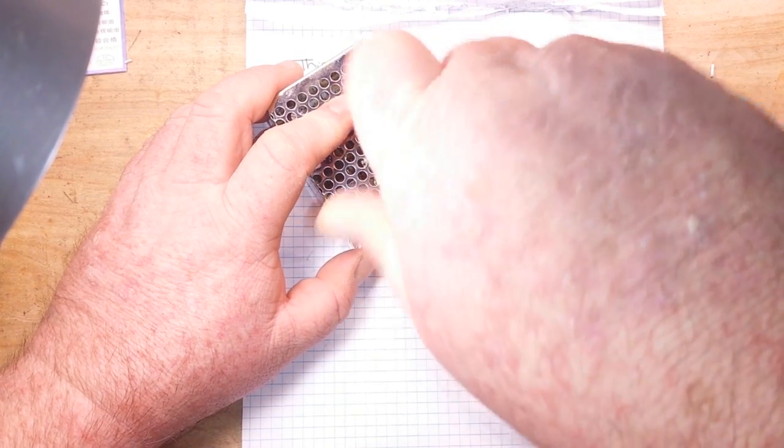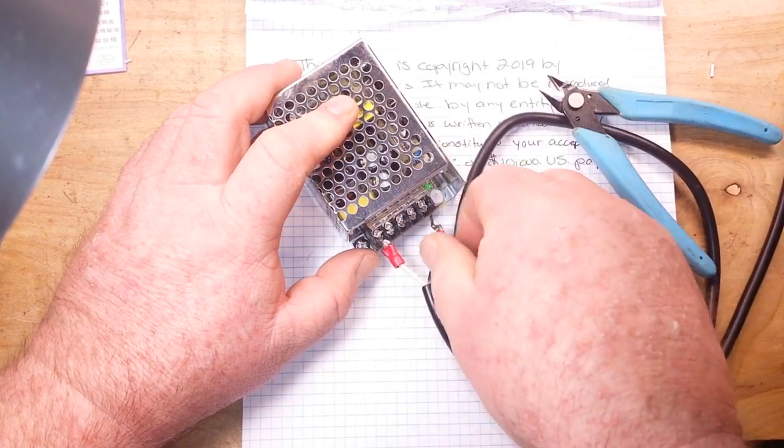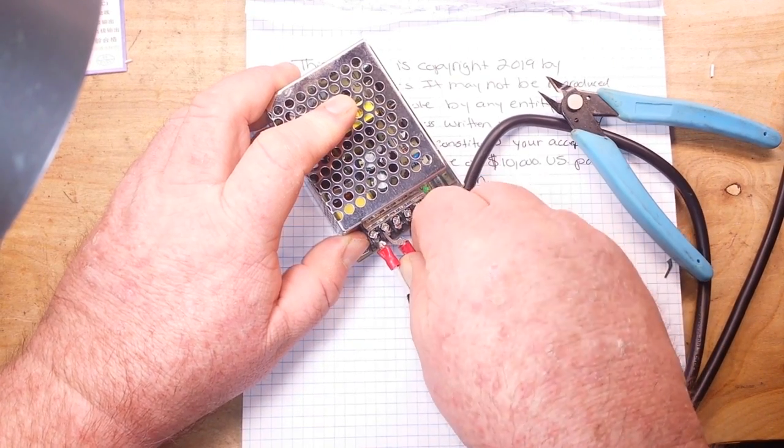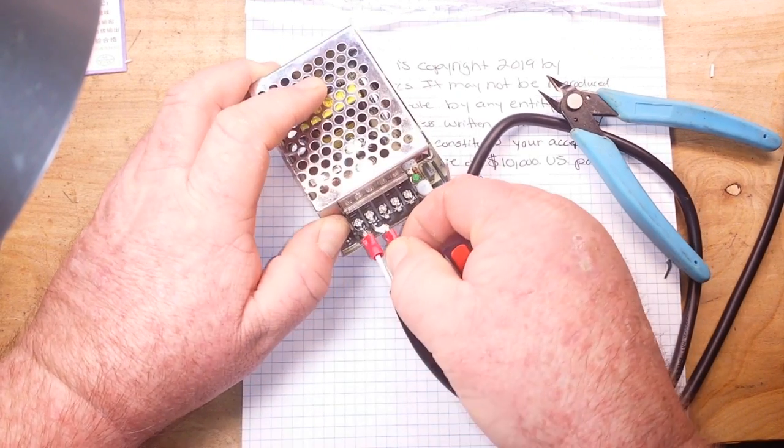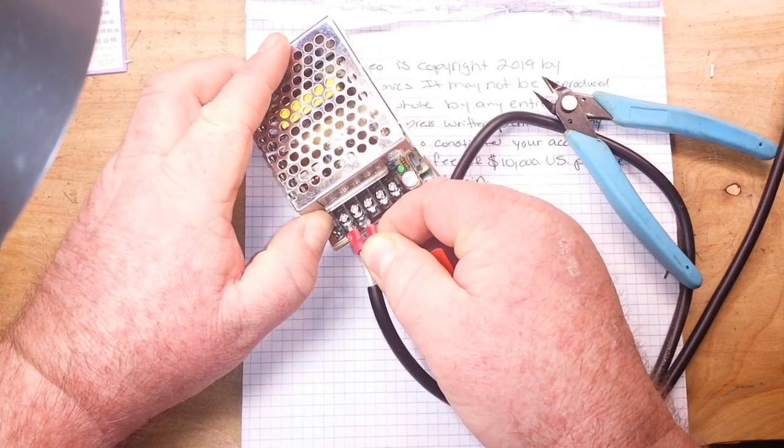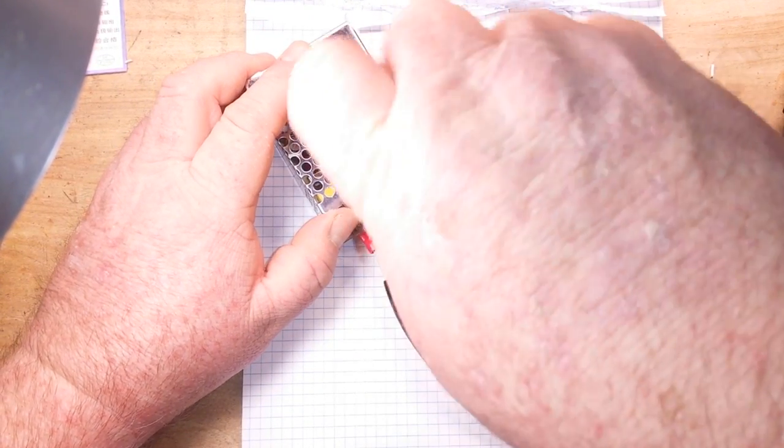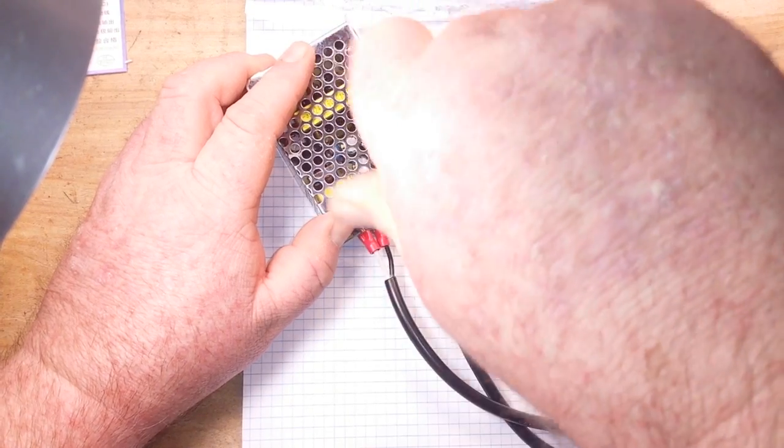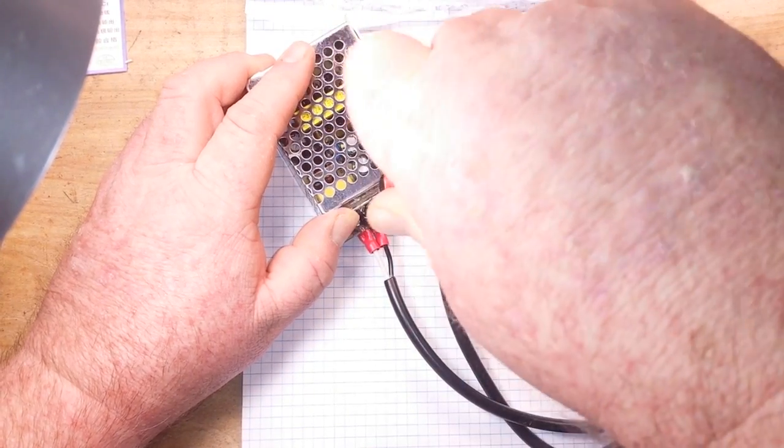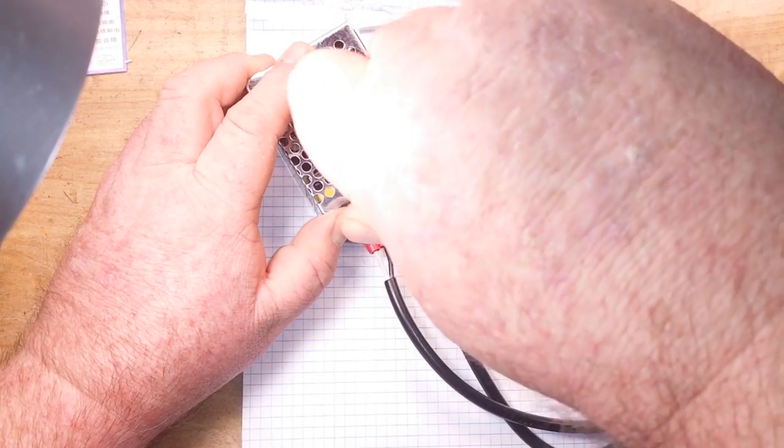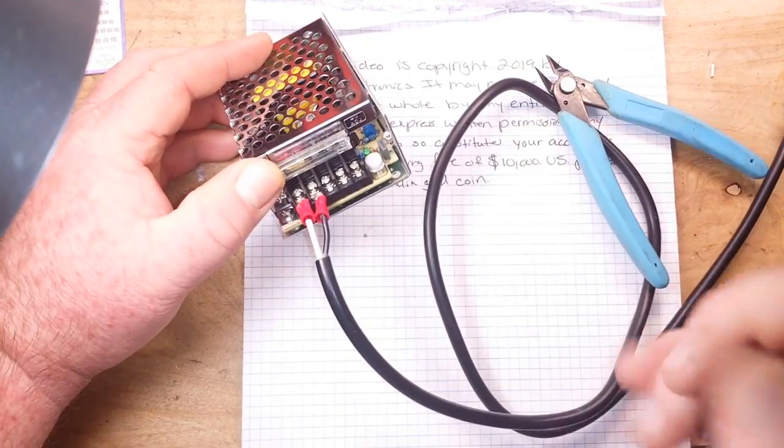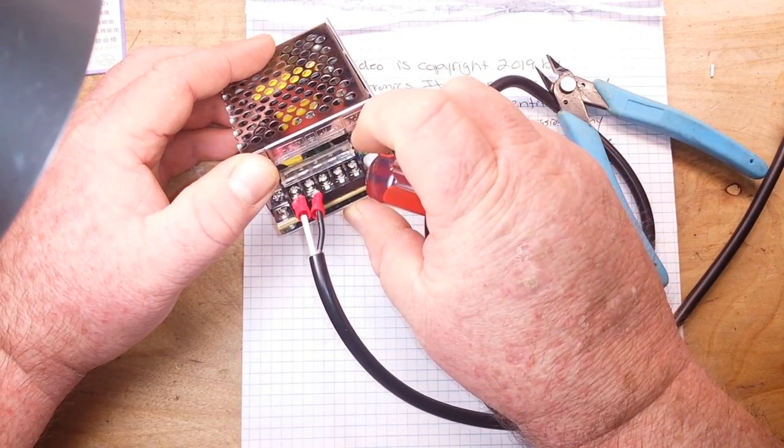Now that voltage adjust doesn't mean this is basically an adjustable power supply. This is, like I said, 24 volt at one and a half amp. The adjust is just so that you can tune it right into the 24 volt point. That's really all that's for.